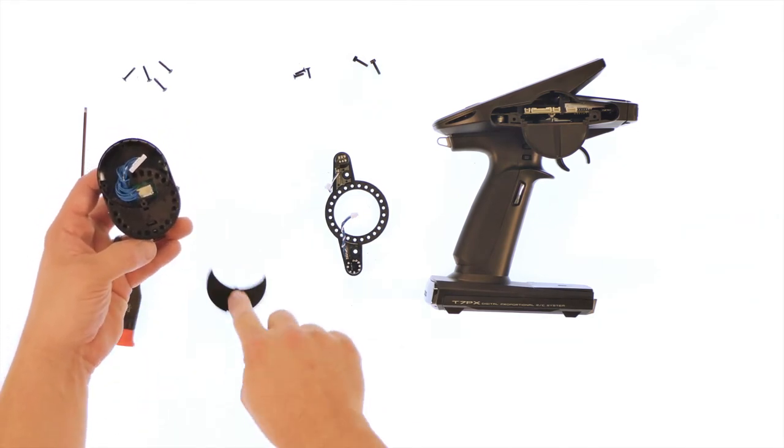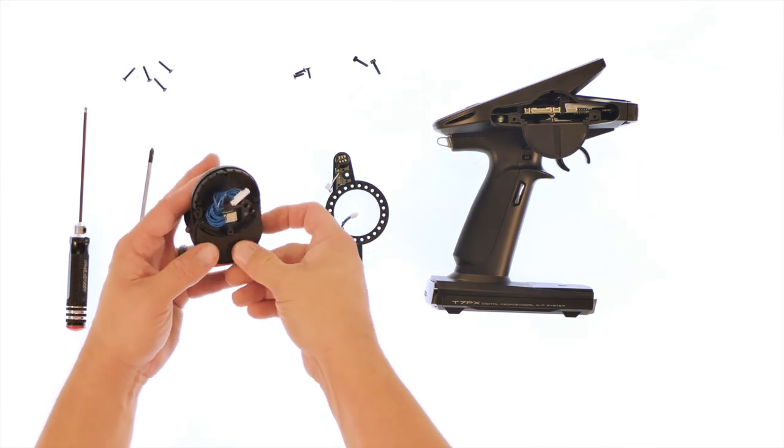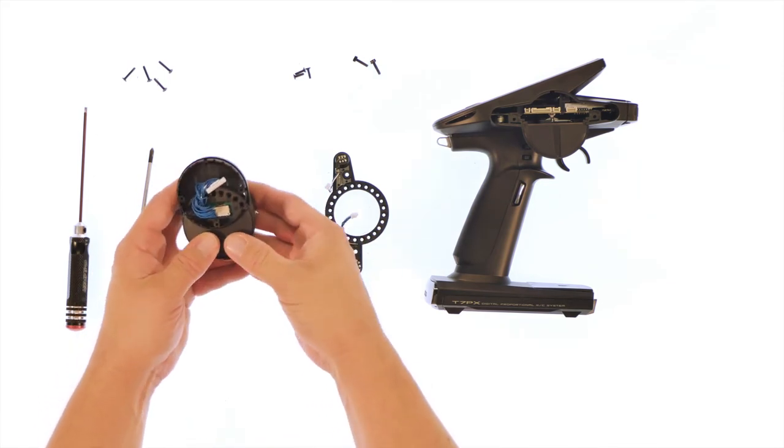At this time, we'll also install the half-moon cover. It protects against dirt or debris getting inside the transmitter. This pops in place.